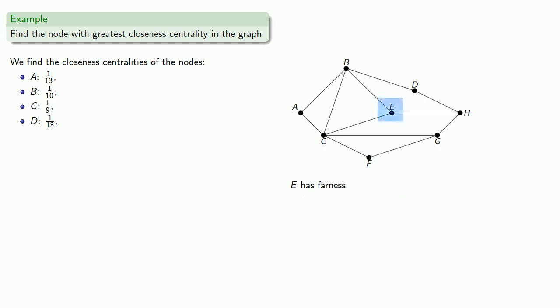For E, we see there's 3 nodes at distance 1, and 4 nodes at distance 2, for total farness of 11 and closeness 1/11. For F, we see 2 nodes at distance 1, 4 nodes at distance 2, and 1 node at distance 3. Our total farness will be 13, and our closeness 1/13.